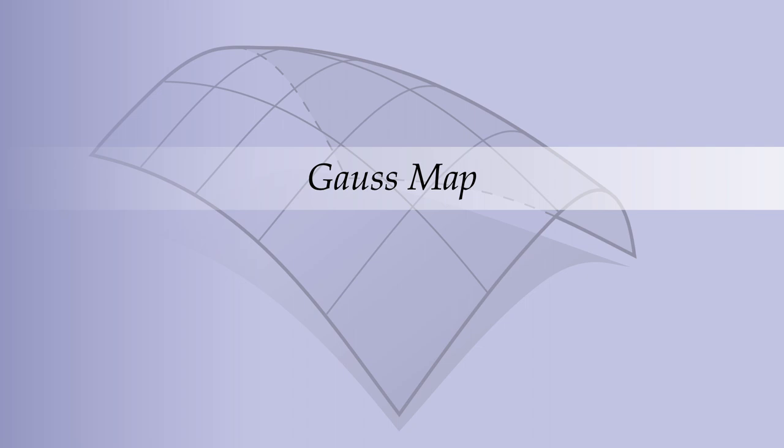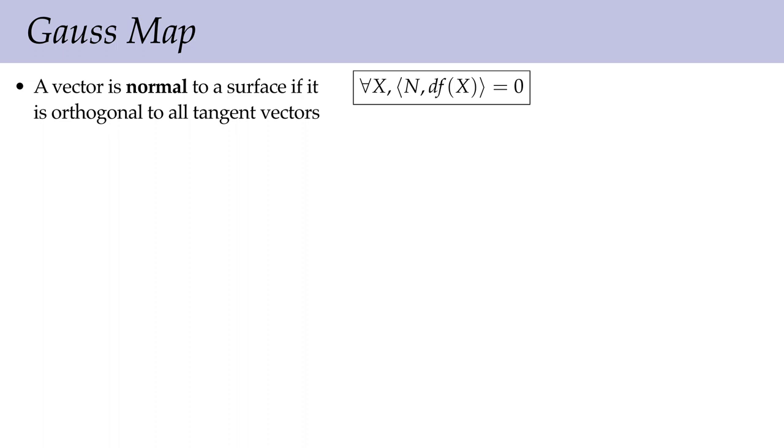Once we have this immersion and know we have a nice surface, what other quantities can we easily define? One really important thing to talk about is the normals of the surface, captured by what's called the Gauss map. We talked a little bit about normals for curves — if we have a tangent to a curve in the plane, the normal is the vector rotated by 90 degrees, the direction you'd travel to leave the surface as quickly as possible. More precisely, a vector is normal to a surface if it's orthogonal to all tangent vectors.